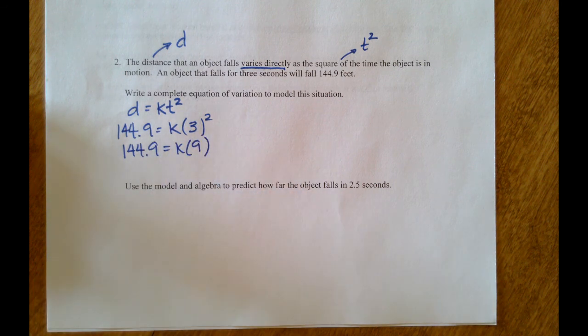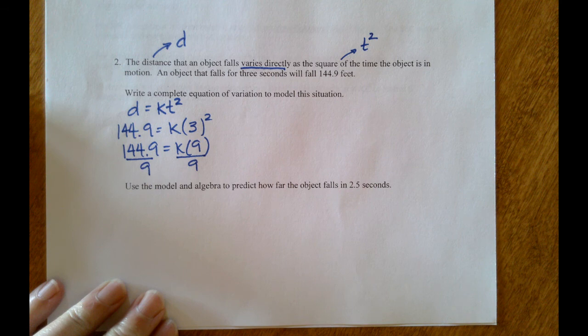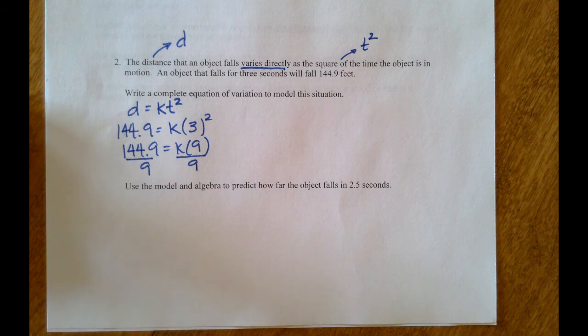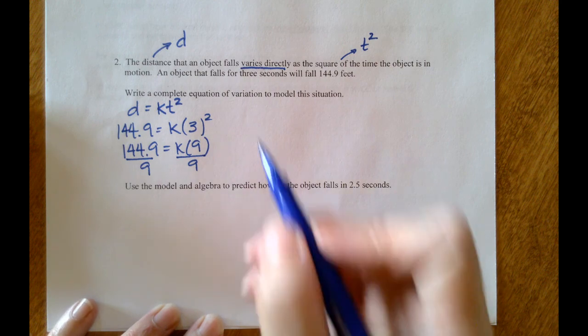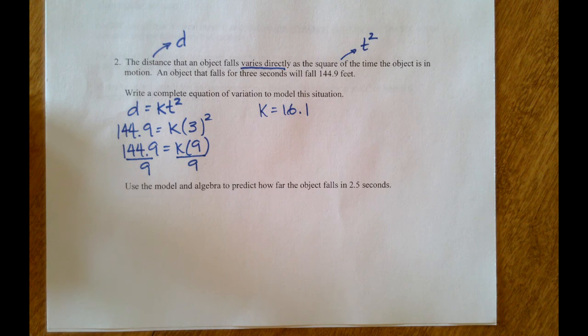144.9 equals k times 9. Divide both sides by 9 to get that k isolated. And when I do that, I get 16.1 for k, and that's without any rounding, that was exactly 16.1.